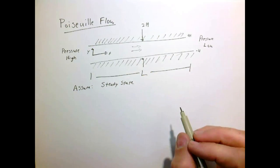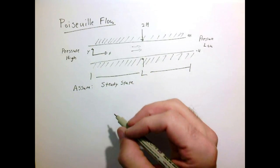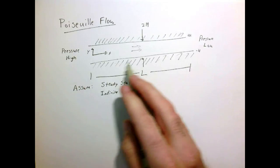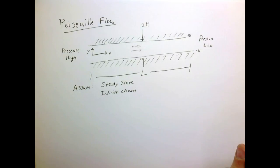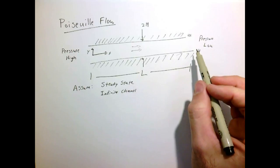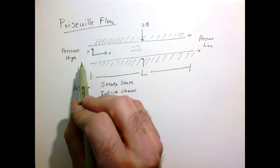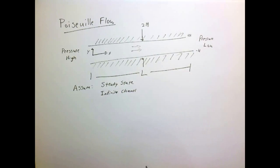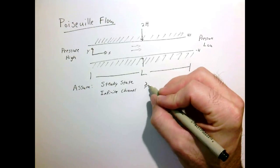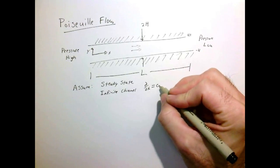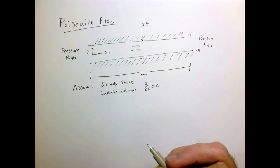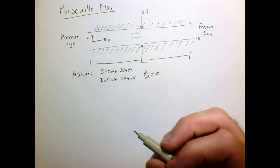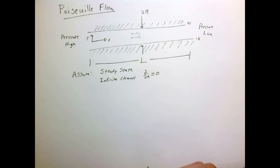We're going to assume two things. First, that we're at steady state — no change in time. Second, that we have an infinite channel. Even though a section of length L is drawn, we consider it extends to infinity in both directions. This means we've reached a steady state not only in time but also in space, so the flow isn't varying from point to point. All derivatives with respect to x are equal to zero. These two assumptions will simplify the problem. Now let's write out the Navier-Stokes equations in component form in two dimensions.